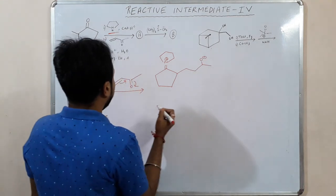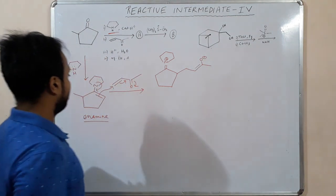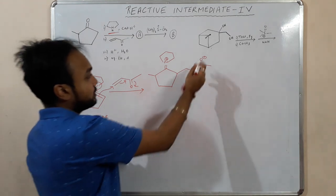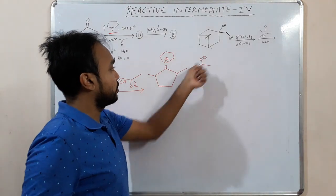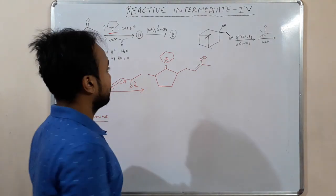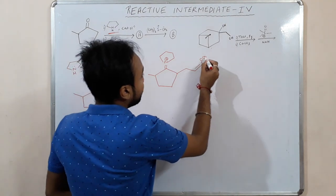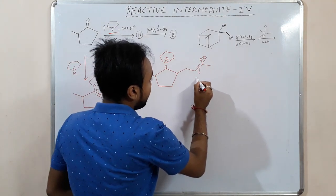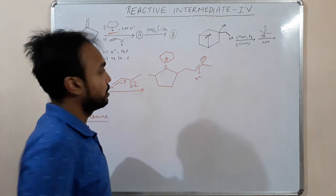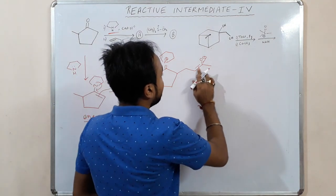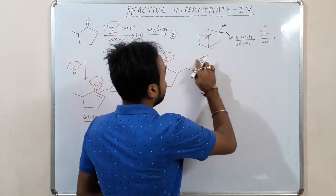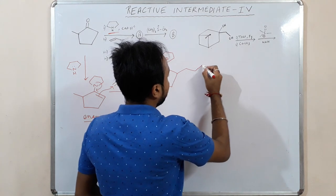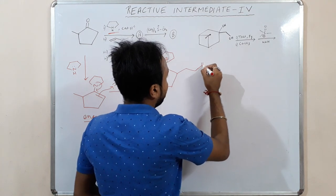We have an O-minus and a double bond here. This will undergo tautomerization and will take up a proton. So what is forming — it is basically forming a ketone.